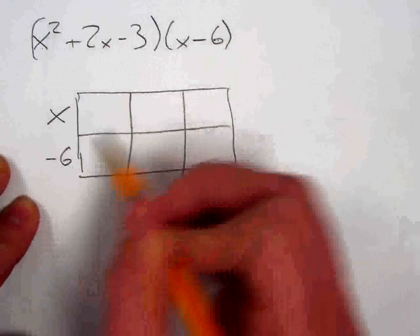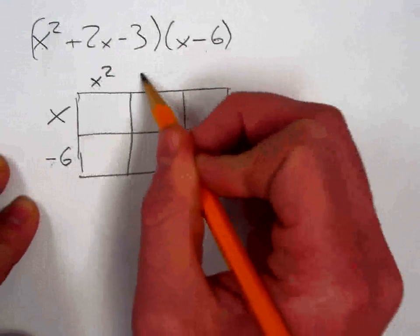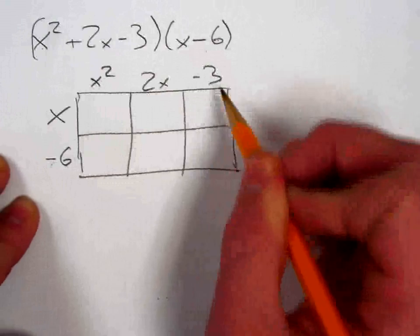My binomial factor is x minus 6, so I've got to keep the minus sign or the negative sign with the 6. And then my trinomial goes here.